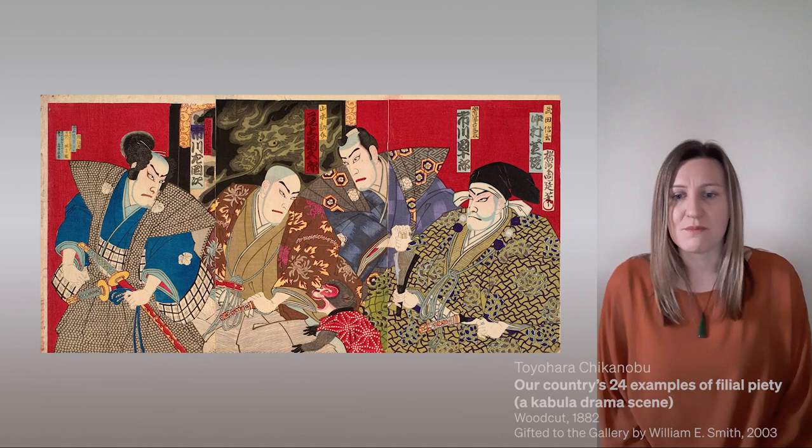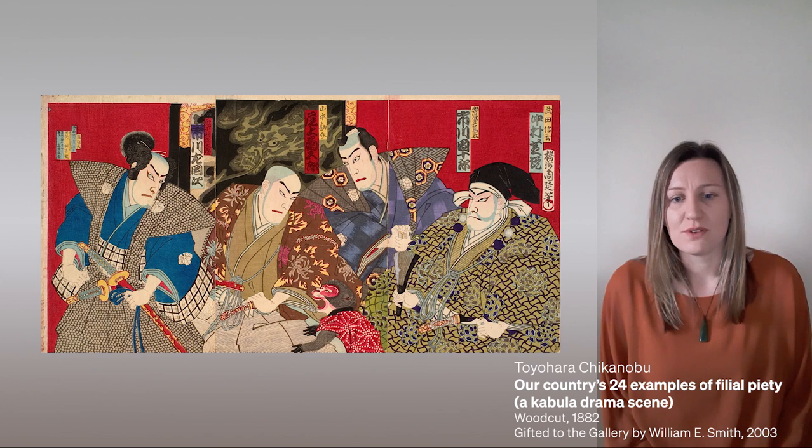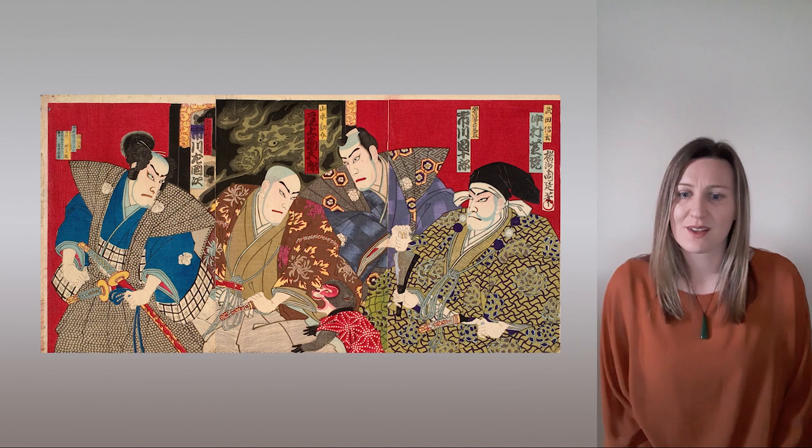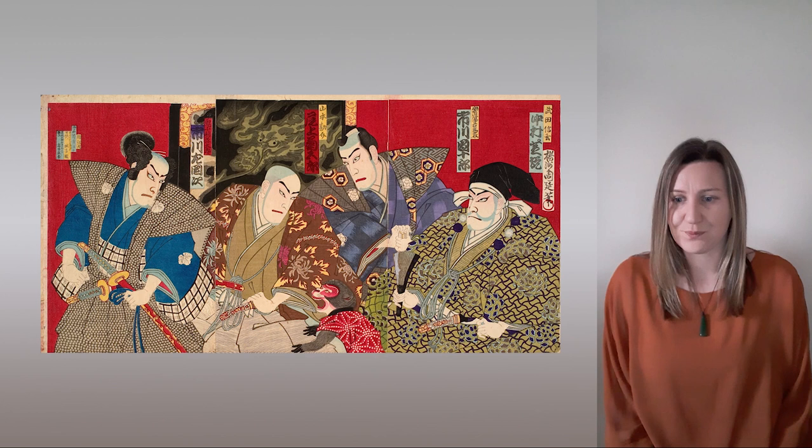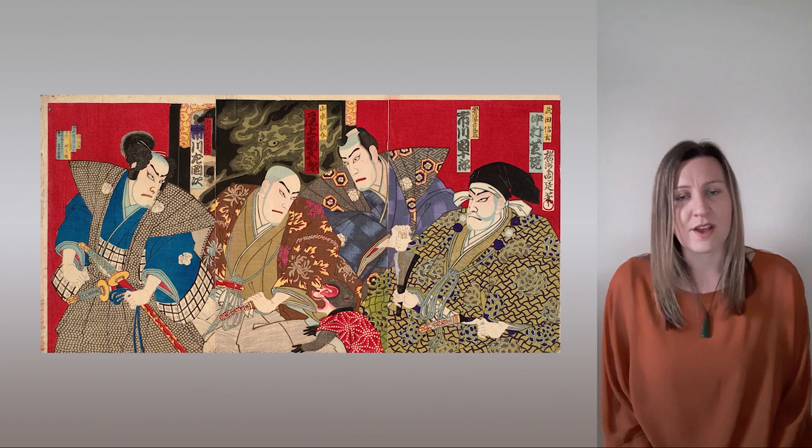Actors often modelled the latest fashion for men. In the print by Toyohara Chikonobu, we can see all four kabuki actors wearing beautifully decorated kimonos, each with a very different pattern to the others. When inside the theatre, it was essential that the audience could recognise, from a distance, who was who. For this reason, actors often had their own emblems that they would wear on their clothing, so that they could be identified.